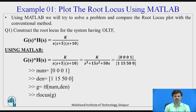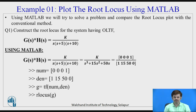Example one: plot the root locus using MATLAB and the conventional method. Using MATLAB, we will try to solve the problem and compare the root locus plot with the conventional method. Construct the root locus for the given system having open loop transfer function G(s)H(s) = K divided by s(s+5)(s+10). To use MATLAB, we need to modify the open loop transfer function into polynomial form.